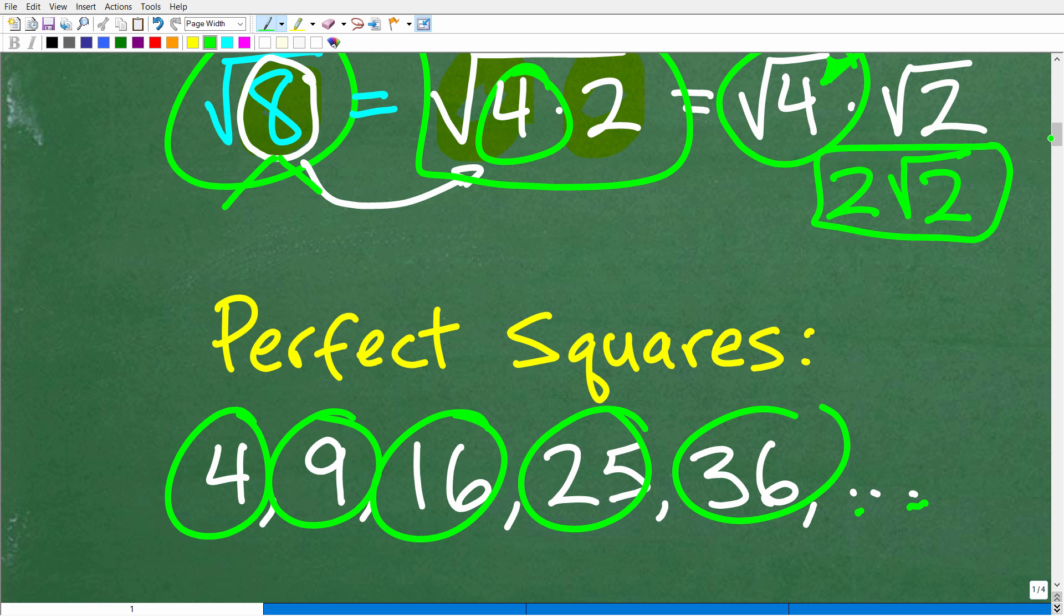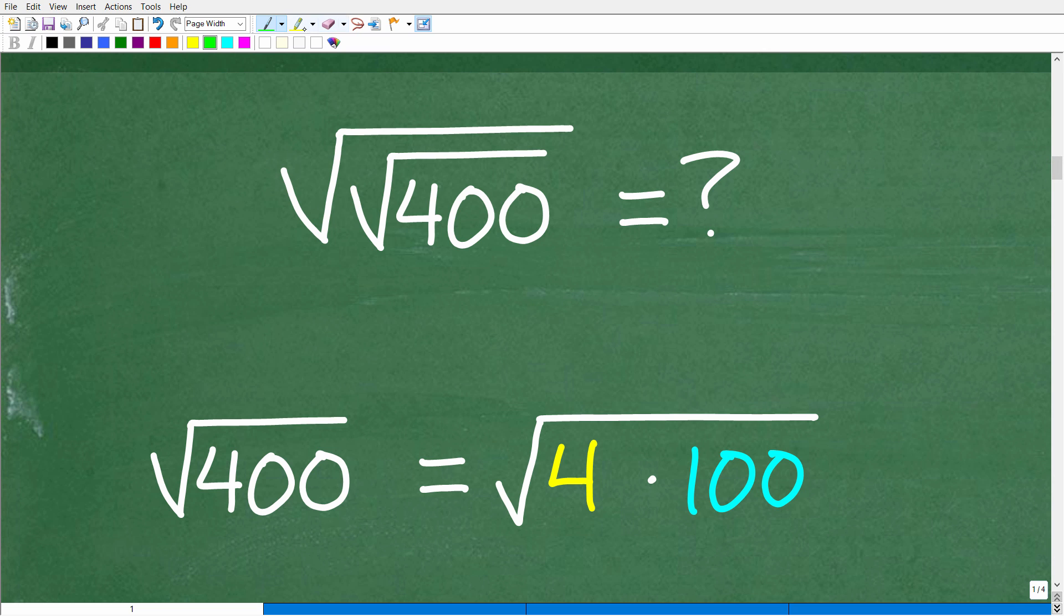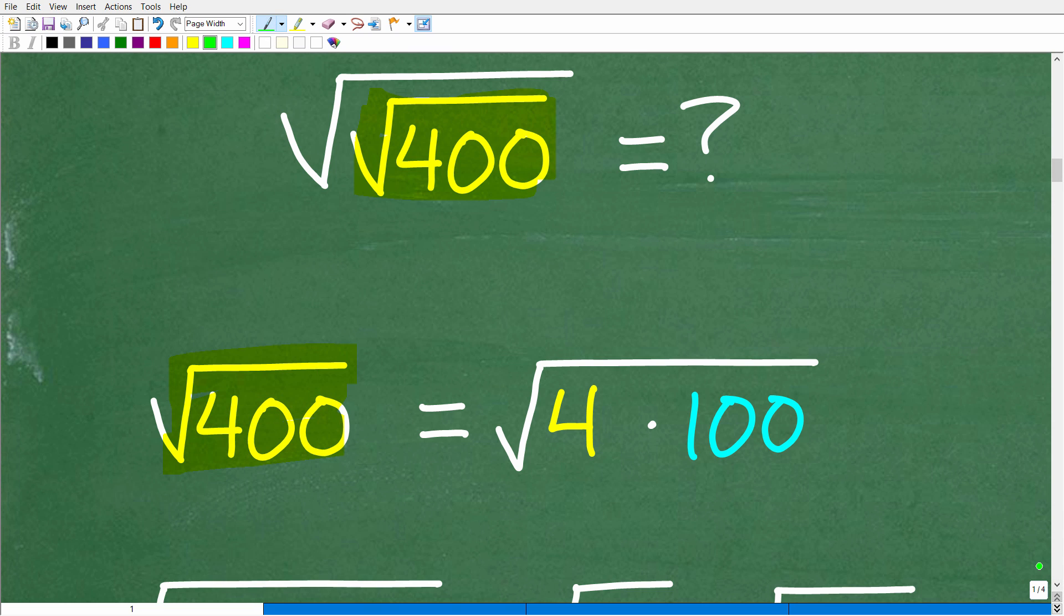So let's go ahead and get into this problem now. So here we have the square root of 400. Let's just focus on this part here. Let's just focus on the square root of 400. We'll get that answer, then we'll take the square root of whatever that's going to be. Okay, so the square root of 400. Can you think of two factors, okay, of 400 that are perfect squares? Well, obviously 400 we could break up as 4 times 100. And this is particularly awesome because both of these factors are perfect squares.